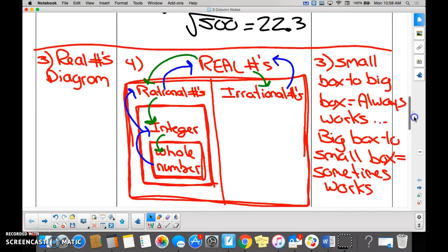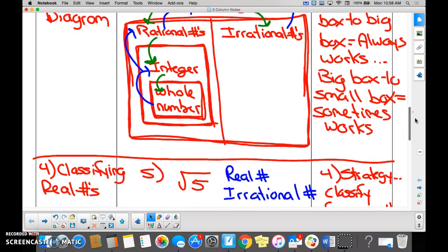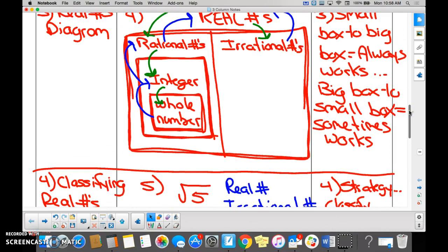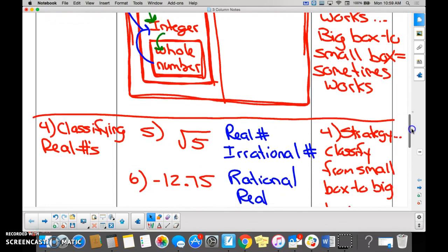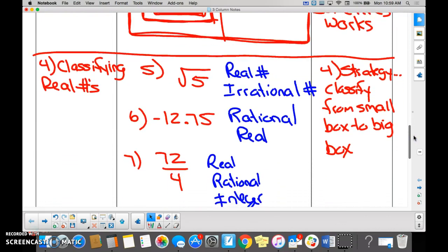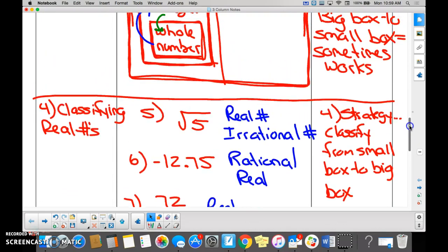Real numbers are always what or what, everybody? They're always rational or irrational. Okay, so we know what an irrational number is. We know what rational numbers are. When you are trying to figure out or you're classifying real numbers, our strategy says we start from the small box and we go to the bigger boxes.